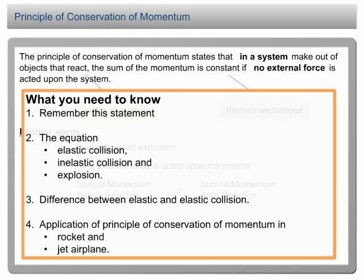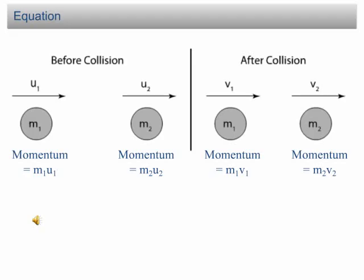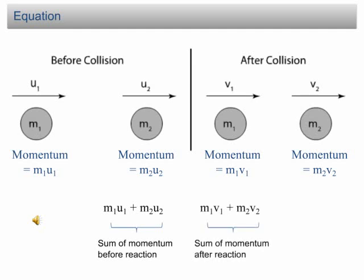Let's begin with the equation. If two balls of mass M1 and M2 collide with each other, the velocities before the collision are U1 and U2, while the velocities after the collision are V1 and V2 respectively. The sum of momentum before the collision is M1U1 + M2U2, and after the collision is M1V1 + M2V2. According to the principle of conservation of momentum, M1U1 + M2U2 = M1V1 + M2V2.